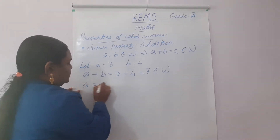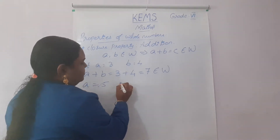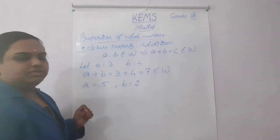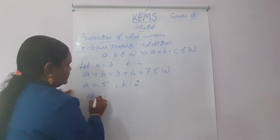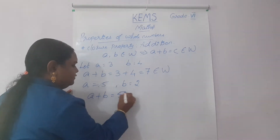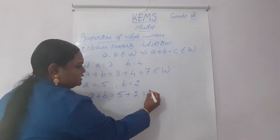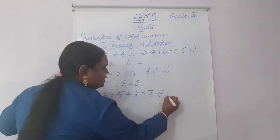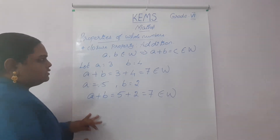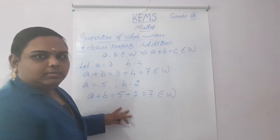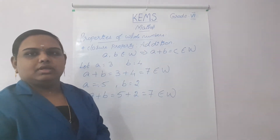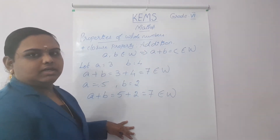Next, I am taking A equal to 5 and B equal to 2. A plus B equals 5 plus 2, which is 7. It belongs to W. So the whole numbers are closed under addition.